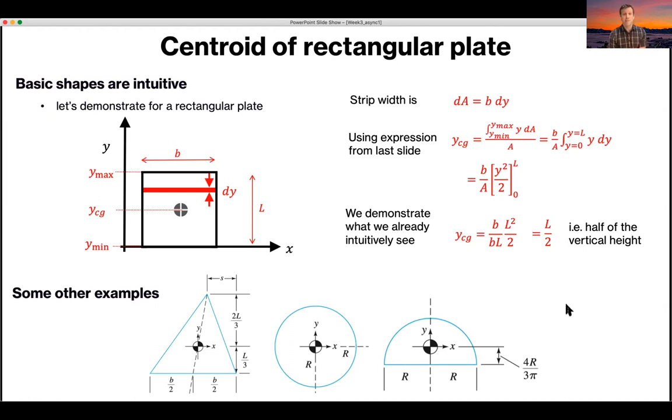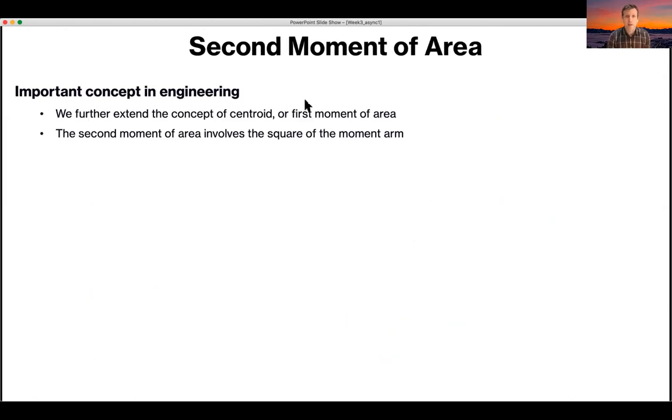So probably that's familiar to you, but the next step might not be. This is where we extend that concept from a first moment of area or a centroid to a second moment of area. So it's exactly the same idea, except instead of times in the area by y, you times the area now by y squared.